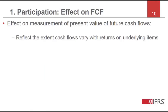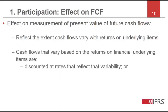When measuring the fulfilment cash flows — specifically the estimates of future cash flows — the entity will need to reflect the extent to which cash flows vary with returns on underlying items. Sometimes the underlying items are financial underlying items, so cash flows that vary based on the returns on such underlying items should be discounted at rates that reflect that variability. In other words, the discount rate should reflect the dependence on financial underlying items.